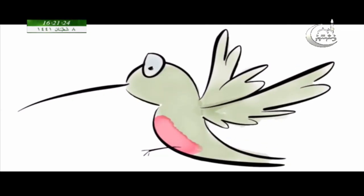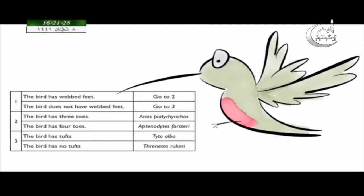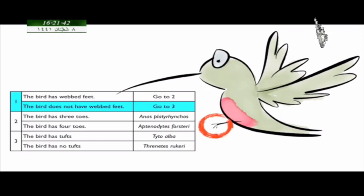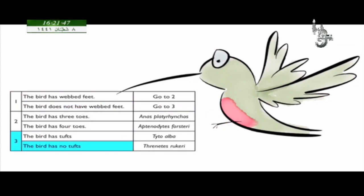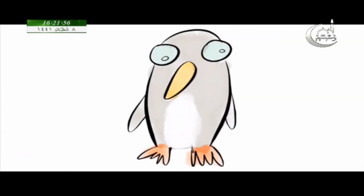Reading a dichotomous key is easy. Take the hummingbird — start at number one, which asks us to observe the feet of the bird. A hummingbird does not have webbed feet, so we go to step three. Step three has us examine the bird's tufts. Our bird does not have tufts, and we have just figured out the scientific name.